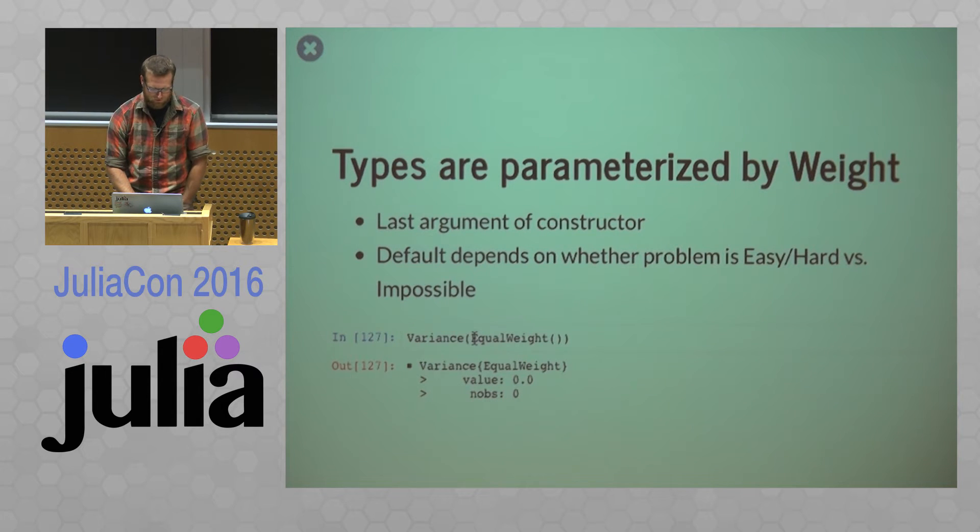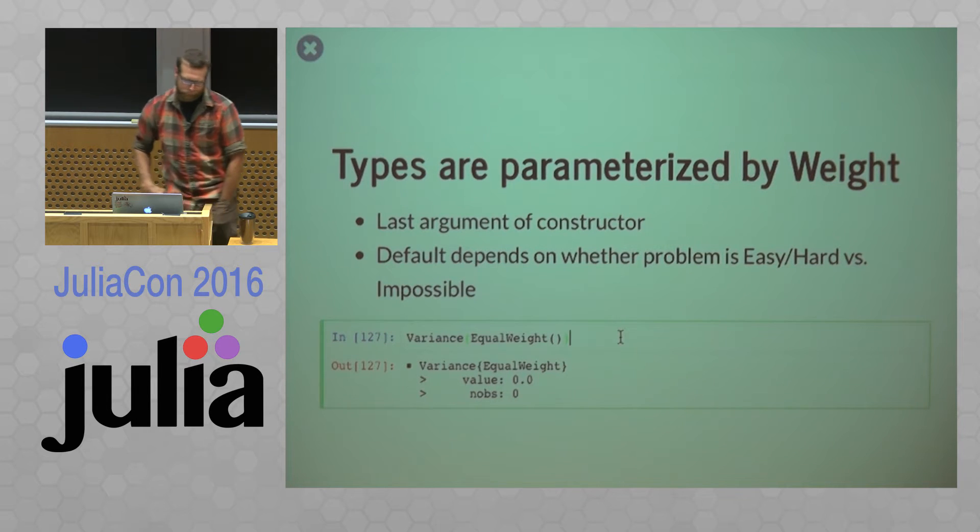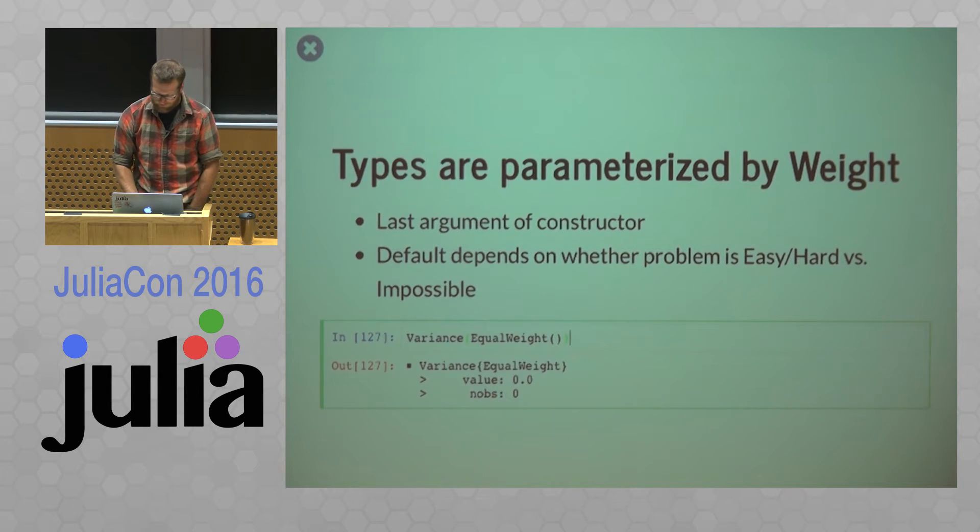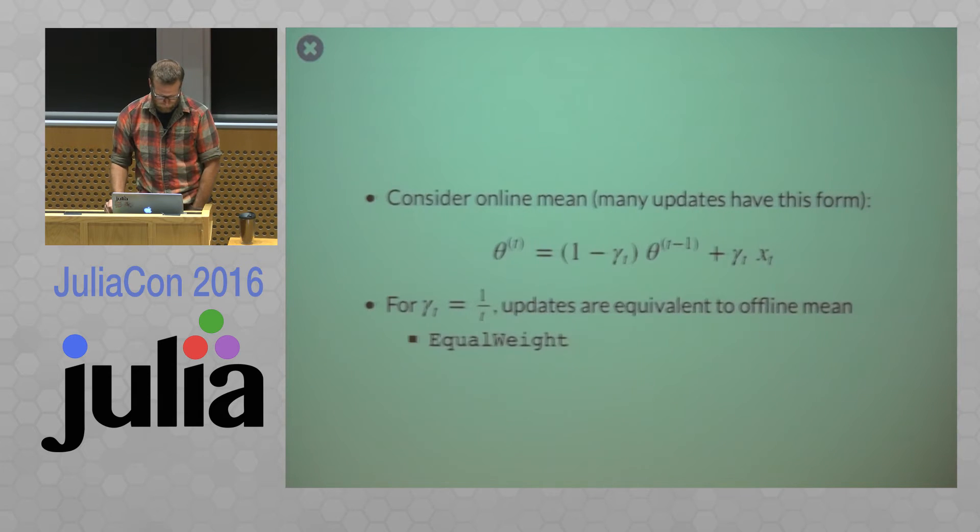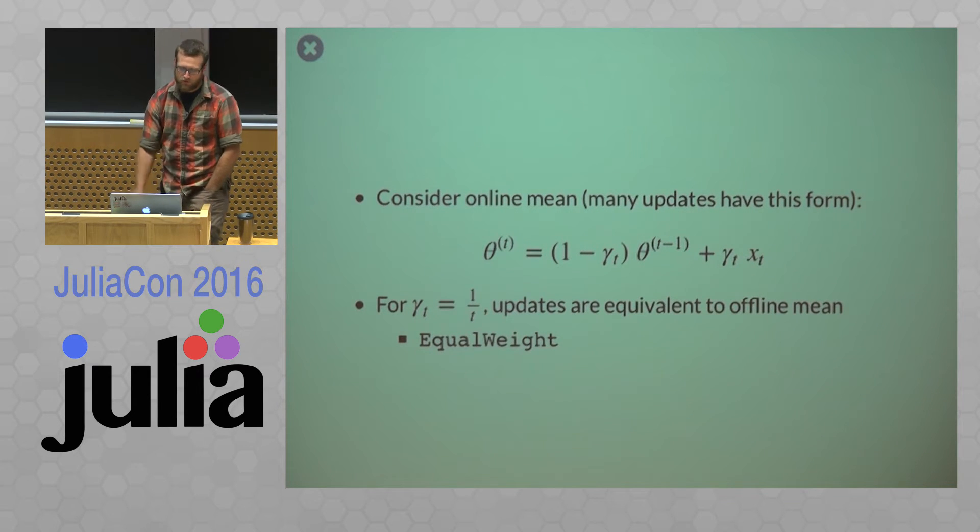So most things are given an equal weight by default. So this means if the online algorithm can be calculated the same as the offline algorithm if it's possible to get the same result using an equal weight is how you're going to get that.